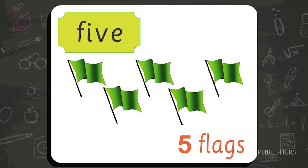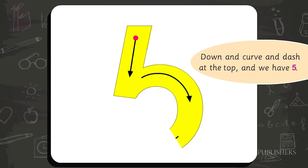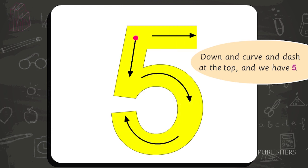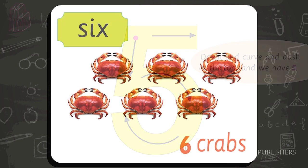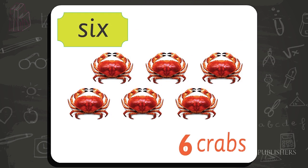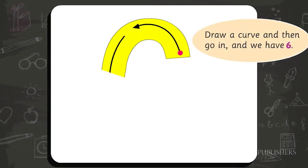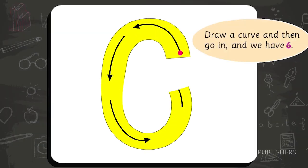Five — five flags. Down, in curve, and dash at the top, and we have five. Six — six crabs. Draw a curve and then go in, and we have six.